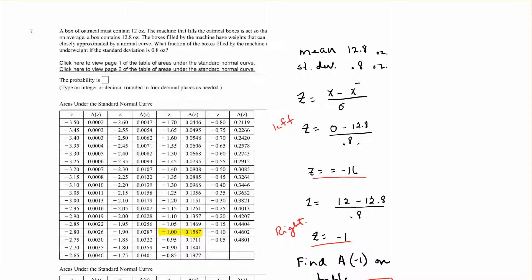A box of oatmeal must contain 12 ounces. The machine that fills the boxes is set so that, on average, a box contains 12.8 ounces. The boxes filled by the machine have weights closely approximated by a normal curve. What fraction of the boxes filled by the machine are underweight if the standard deviation is 0.8? Our mean is 12.8, standard deviation is 0.8. So z is x minus the mean over the deviation. We're starting at 0 to get on the left of the curve, we start at 0, and then we'll go to the right.